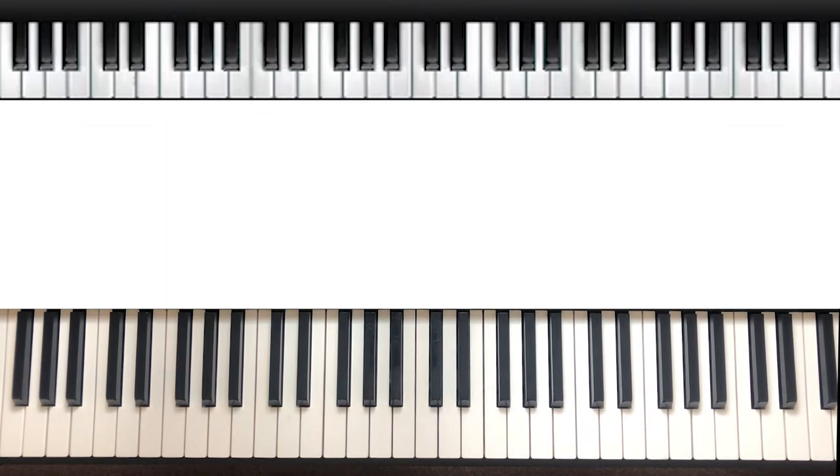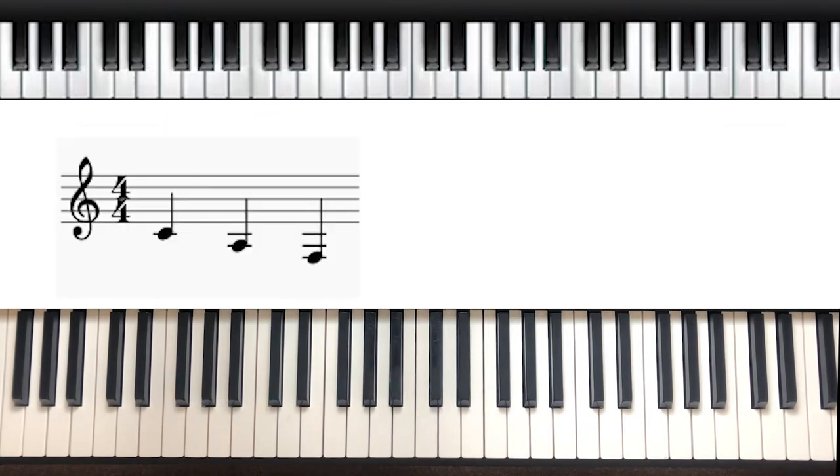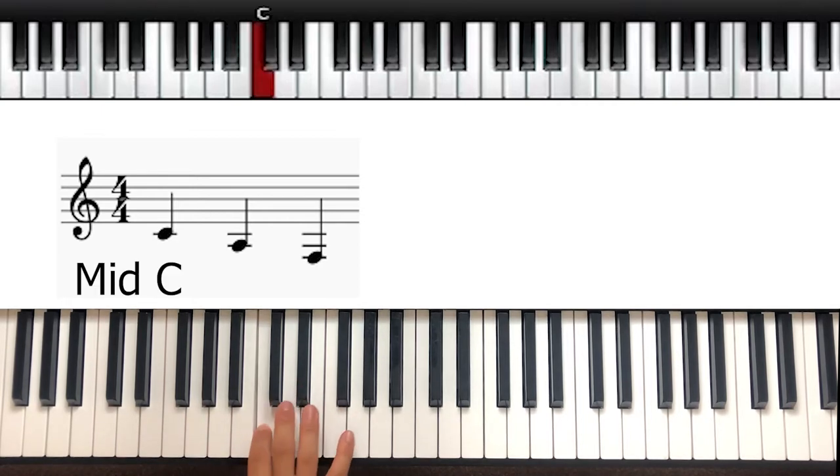You can also have ledger lines underneath the stave. This time the first line below the treble clef is the lovely middle C, probably the first note that you learned on the piano.